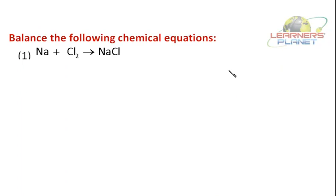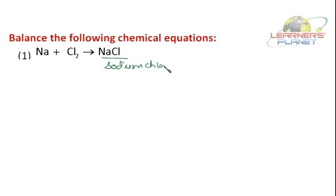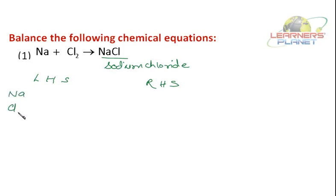Here is a question: balance the following chemical equations. There are many chemical equations which we will have to balance. The first one is sodium with chlorine giving sodium chloride. Check out LHS and RHS — just first write LHS and RHS. What all elements are here? Sodium and chlorine.